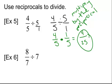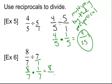Try number six on your own. We're going to make that again over one, then multiply by the reciprocal. This one stays the same — eight-sevenths — and we multiply by one-seventh. Eight times one is eight, seven times seven is forty-nine, so our answer is eight forty-ninths.